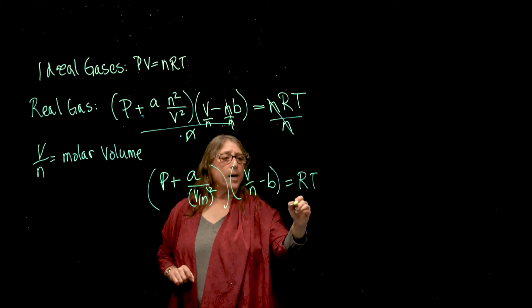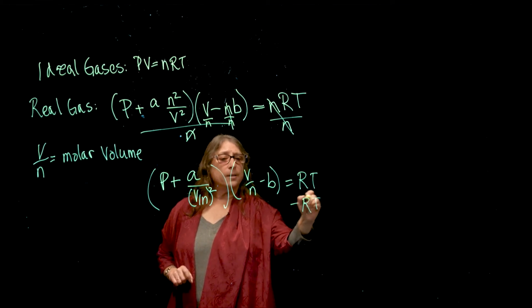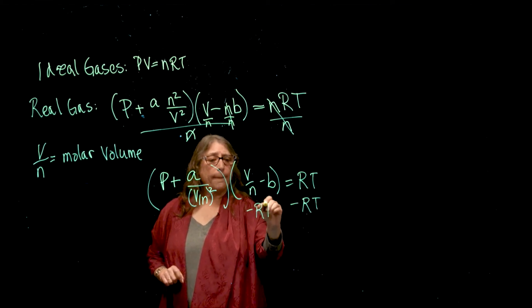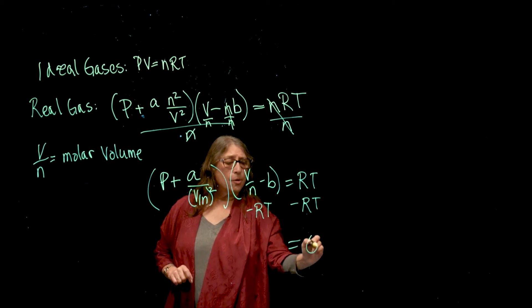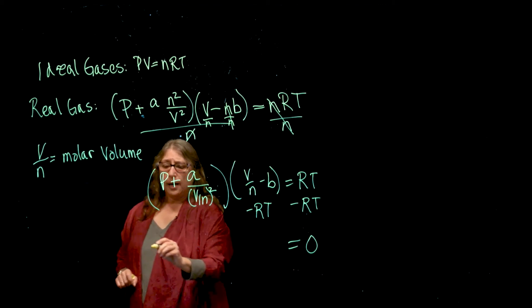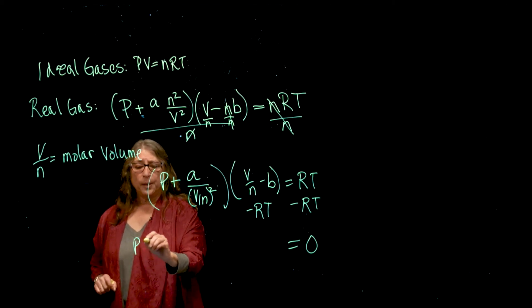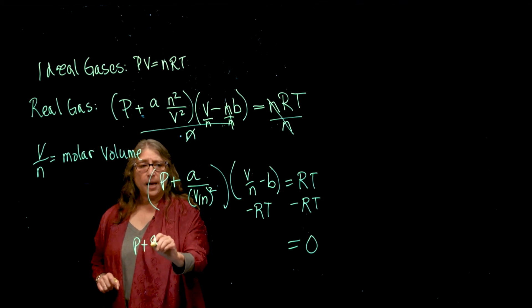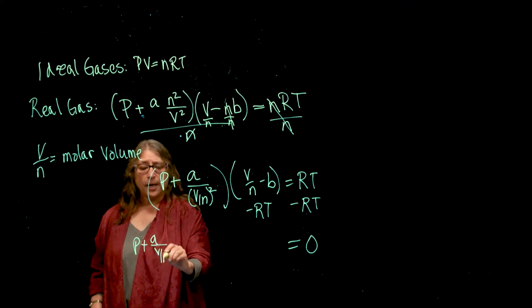Now I can subtract RT from both sides. I'm going to get 0 on the right-hand side, and I'm going to be left with P plus A divided by V over n squared.